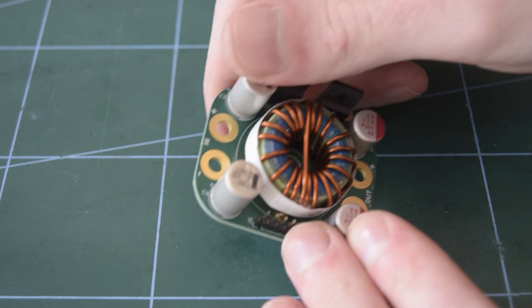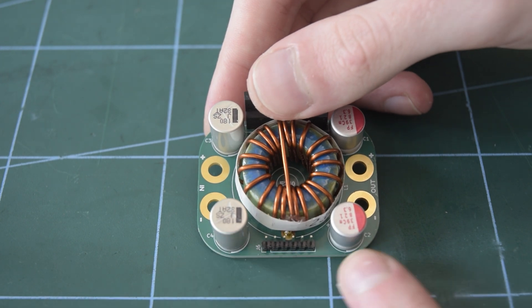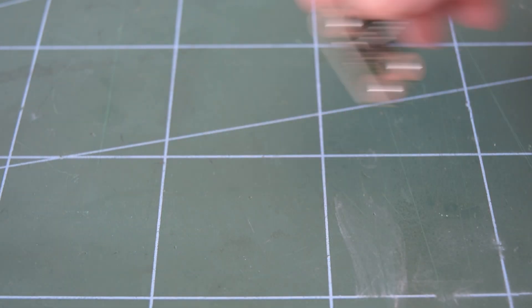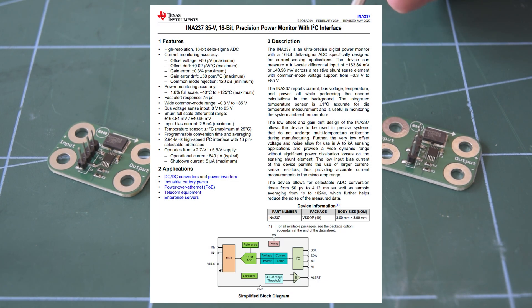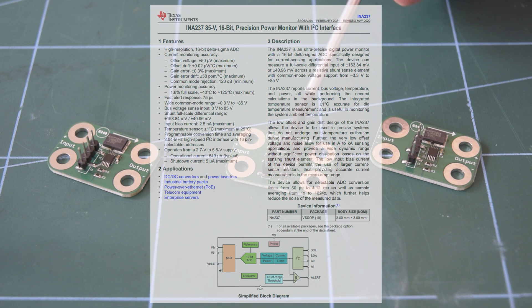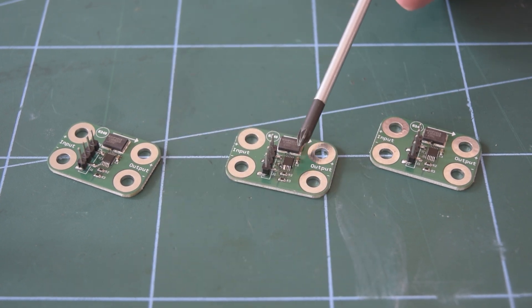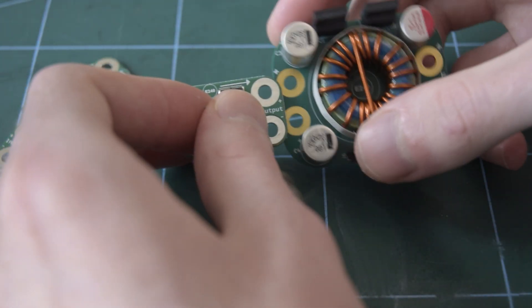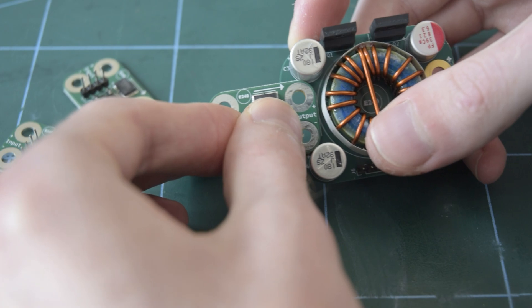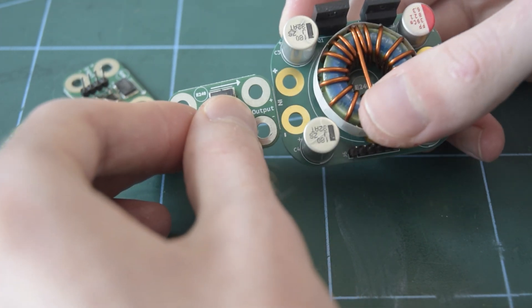Now to calculate efficiency, we obviously need to measure the input power and the output power, and for that I've made these little plug-and-play power monitor modules. These make use of the really nice INA237 power monitor chip from Texas Instruments, which basically just needs a small shunt resistor to measure the current, it can measure the voltage directly, and internally it will calculate the power. Really useful. And as you can probably see, these boards just simply bolt straight onto my buck converter at the input and output. And finally for the controller, I'm just using this dev board thing I made with a microchip arm microcontroller.